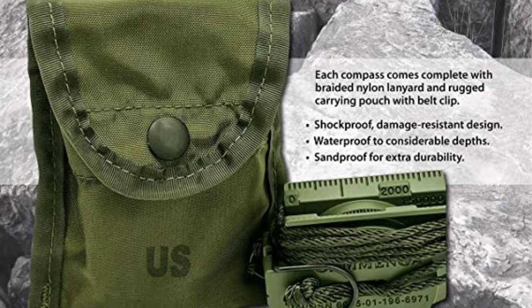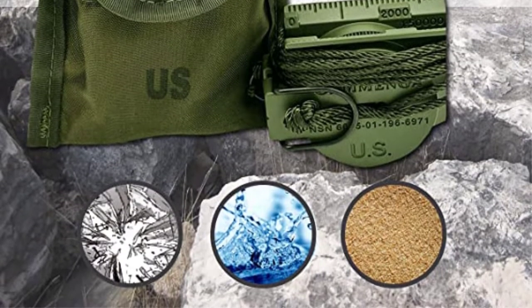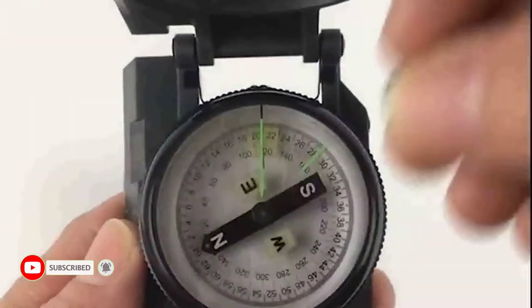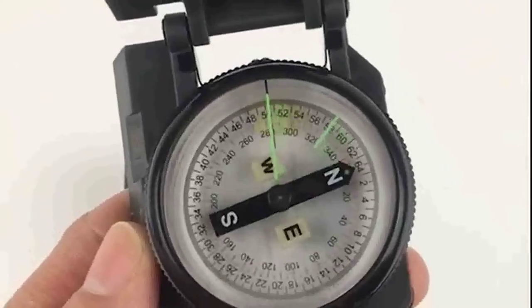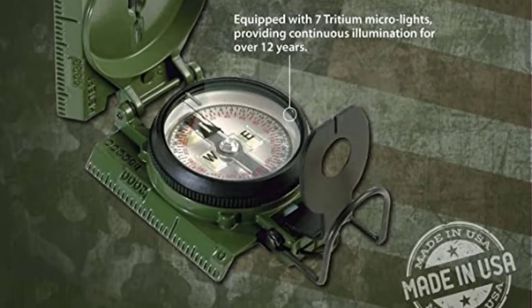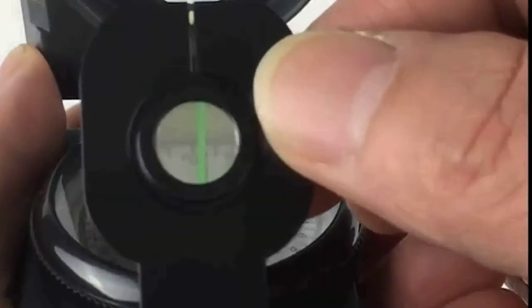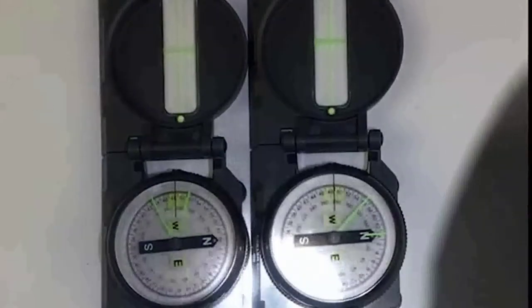This compass's damage-resistant construction makes it shock-proof, watertight, and sand-proof. Being equipped with 7 microlights that can offer illumination even in semi-dark settings for up to 12 years makes it the ideal compass for land navigation. The operation of the compass is unaffected by the temperature outside since it is not filled with liquid. Check out this product review video for some helpful information.